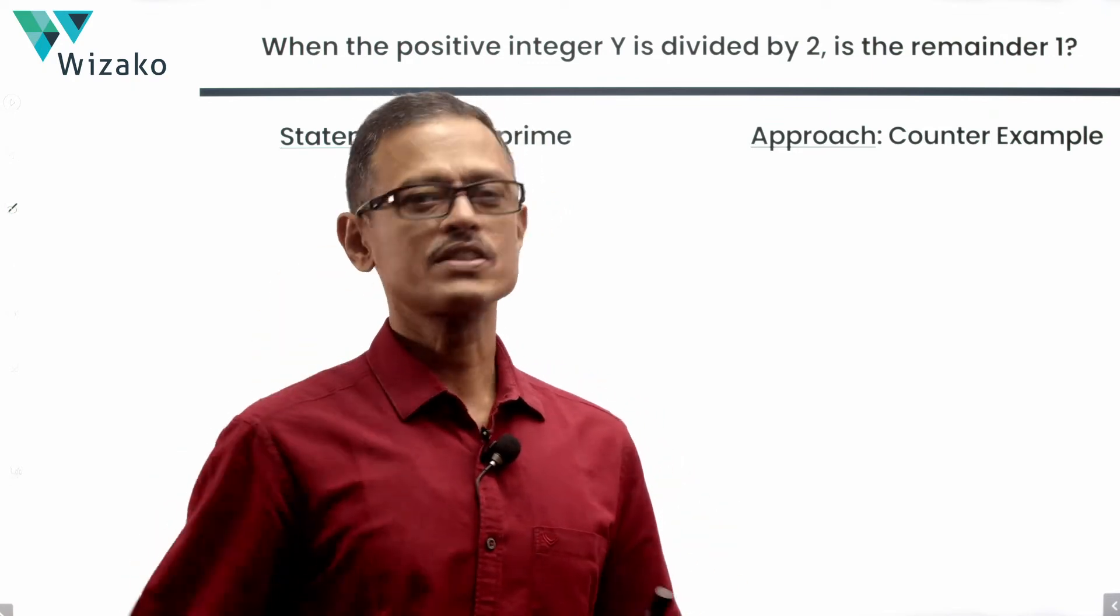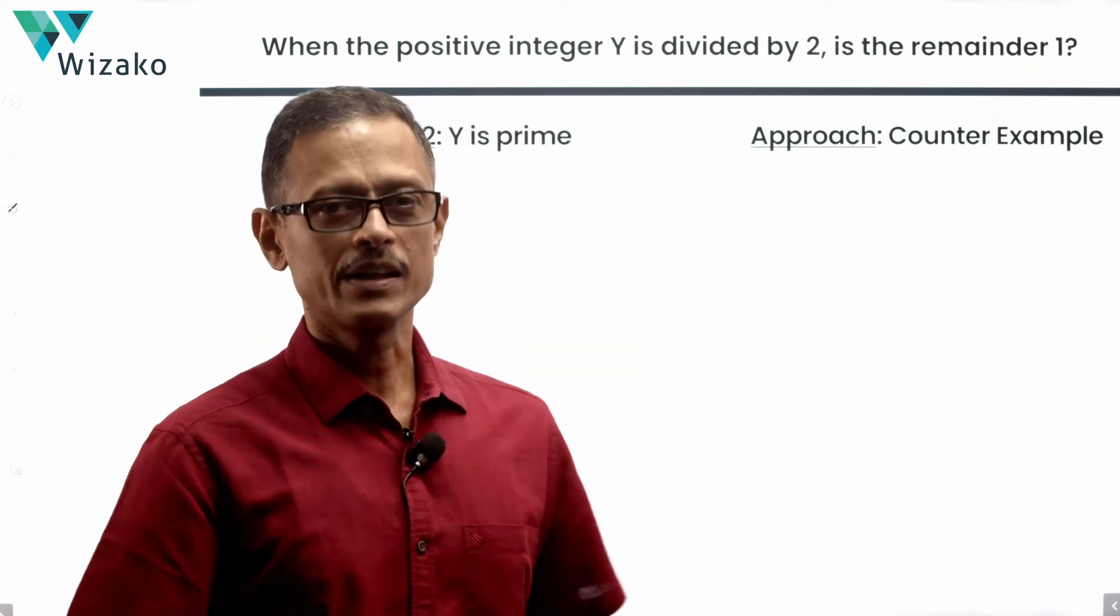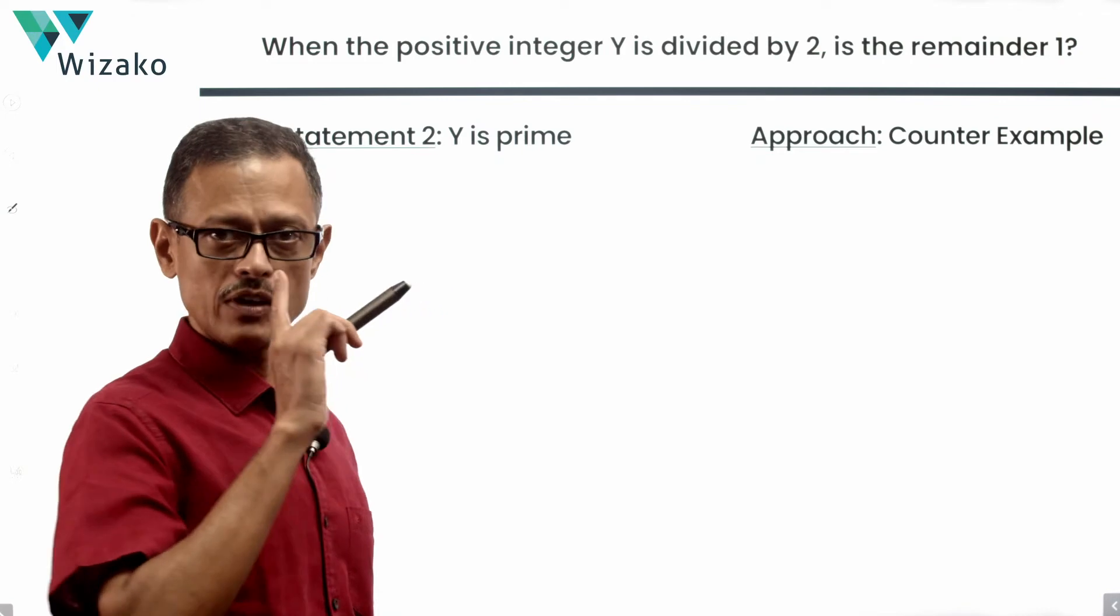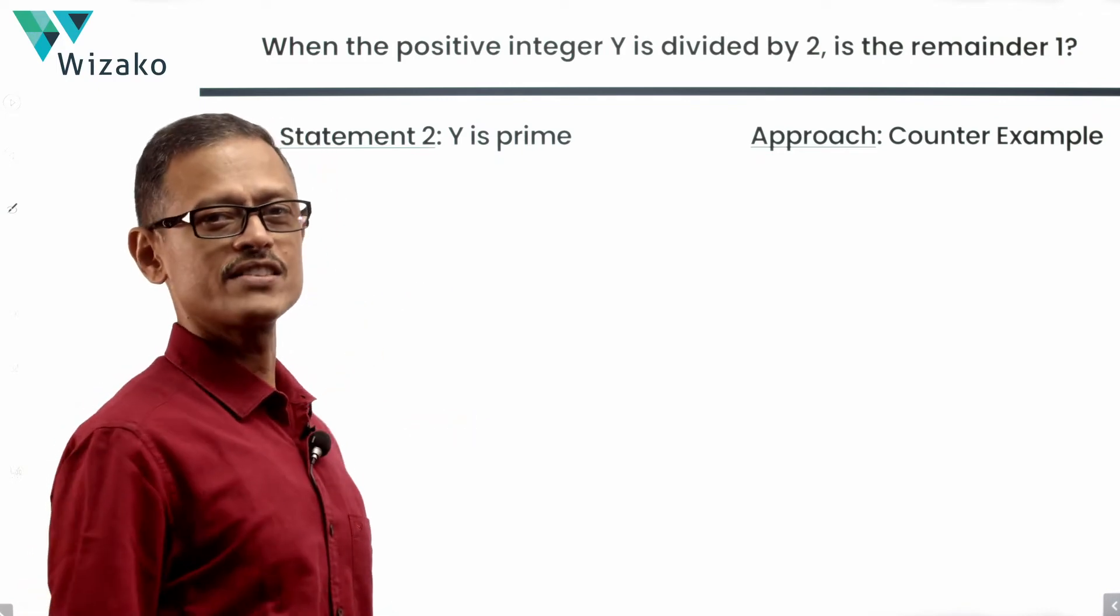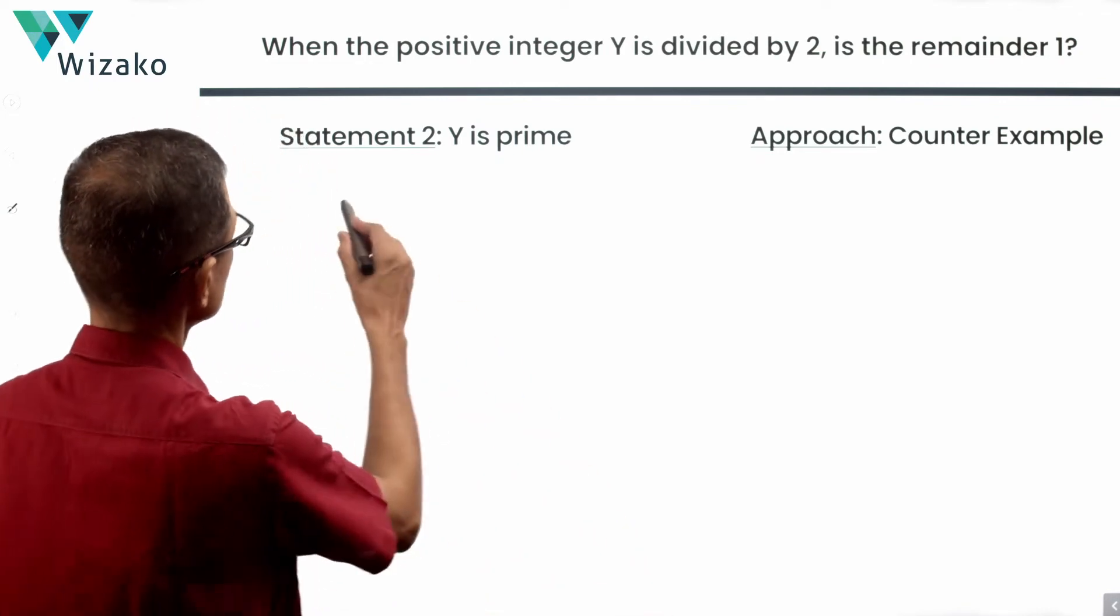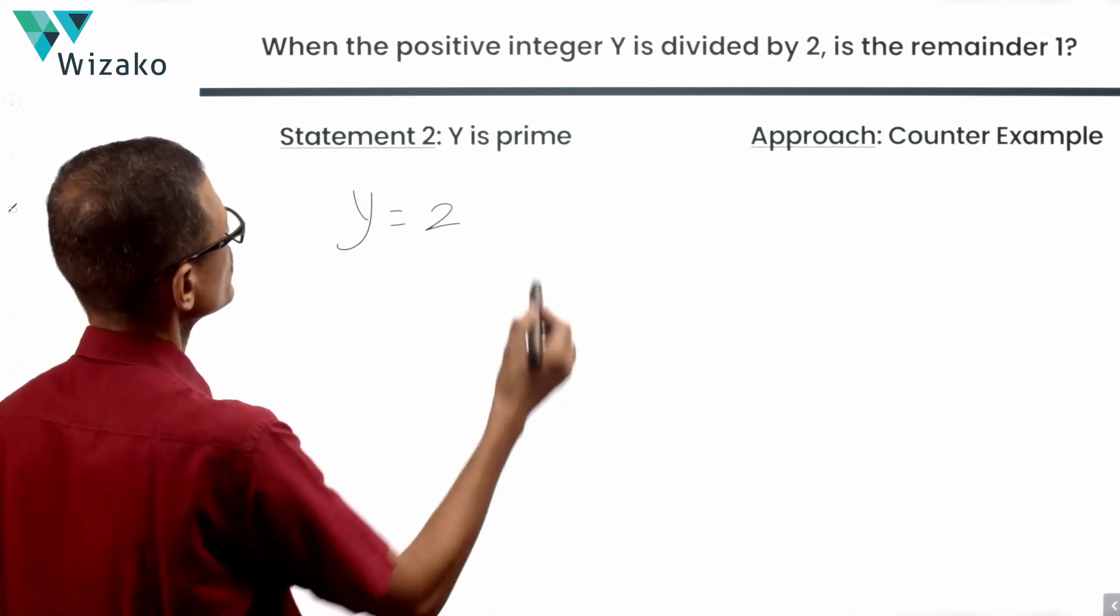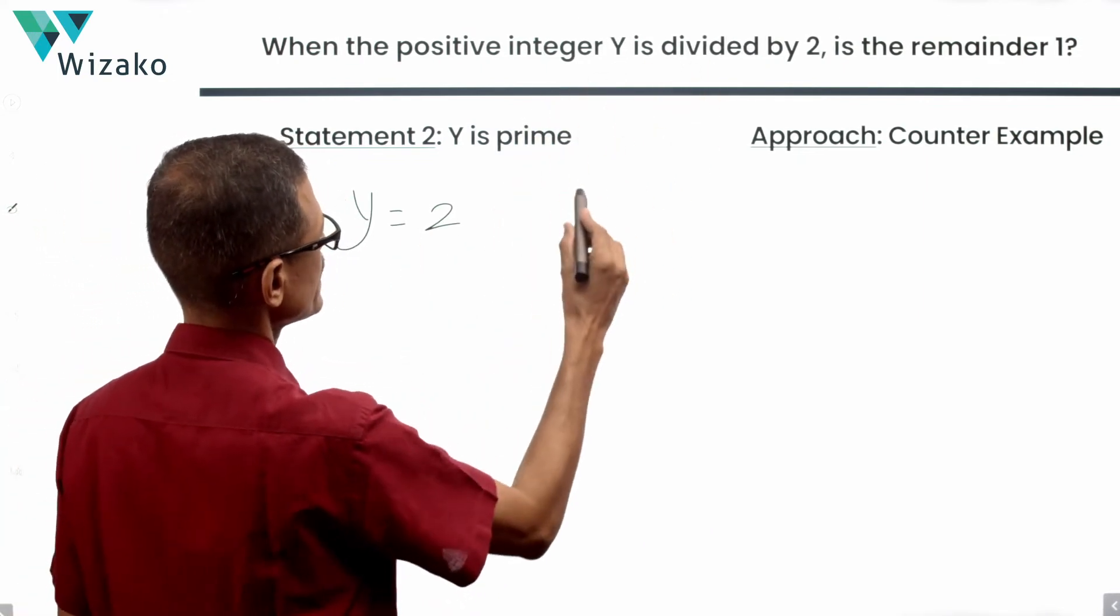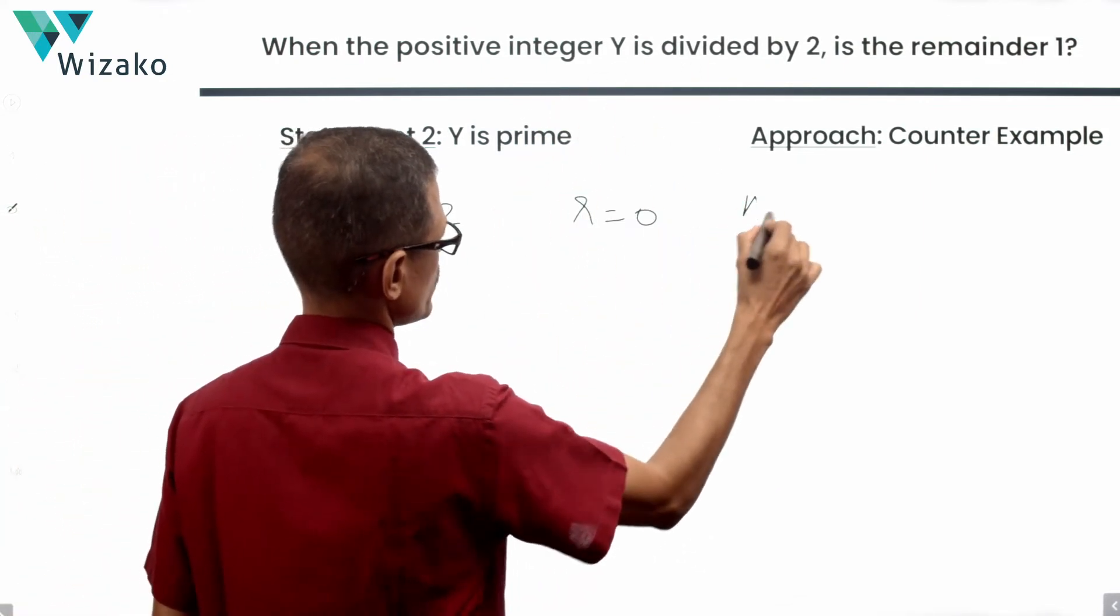So typically, even numbers cannot be prime numbers. Prime numbers will have to be odd numbers. That's what we'll think, except the first prime number, which is 2. So if Y is equal to 2, when divided by 2, the remainder is equal to 0. The answer to the question is no.